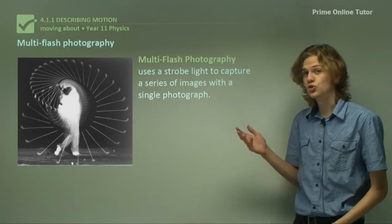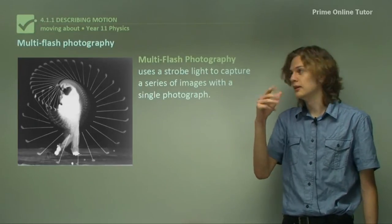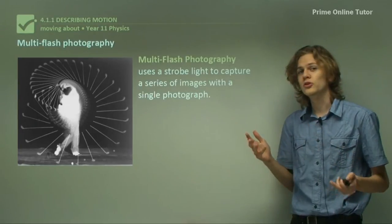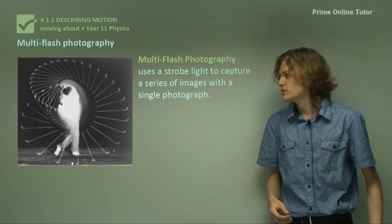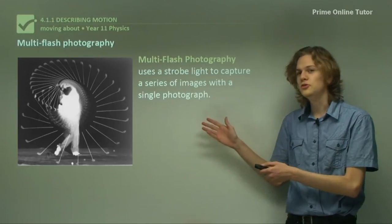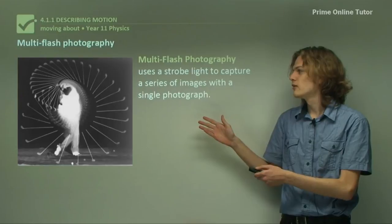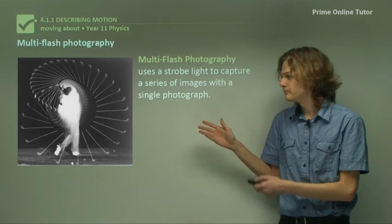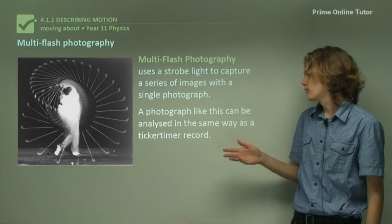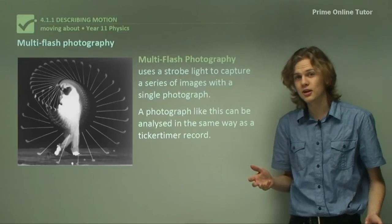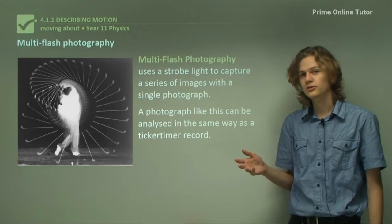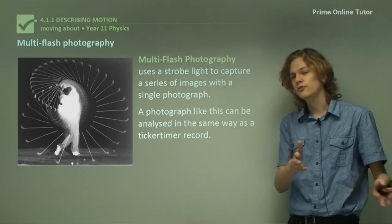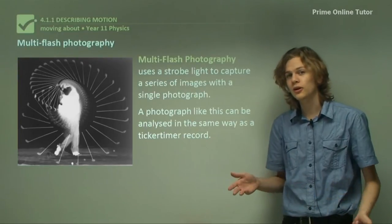Multi-flash photography uses a strobe light, so a light that blinks rapidly, to capture a series of images with a single photograph. So we can see here, multi-flash photography has been used to photograph a golfer swinging a club. A photograph like this can be analyzed in the same way as a ticker timer record. So just like for a ticker timer, when the various images are further away, the object was moving faster.